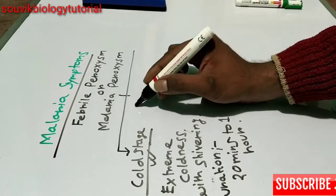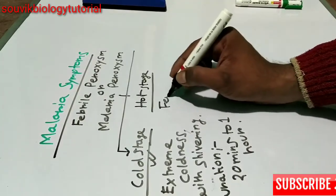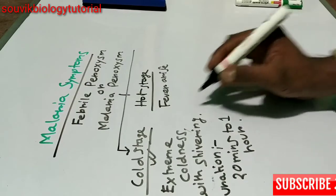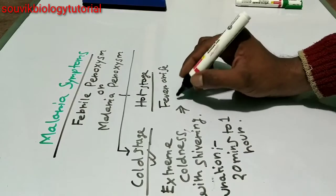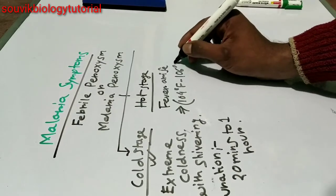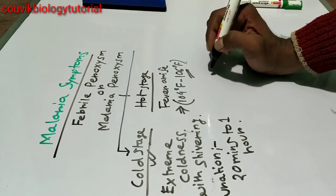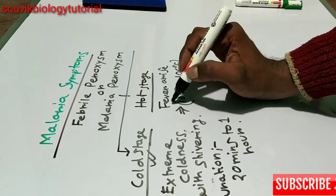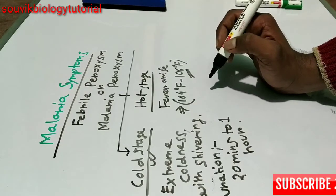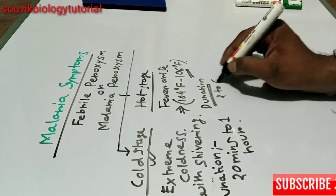The next stage is the hot stage, in which fever arises. The temperature varies from 104 degrees Fahrenheit to 106 degrees Fahrenheit. The duration of this hot stage is 2 to 6 hours.